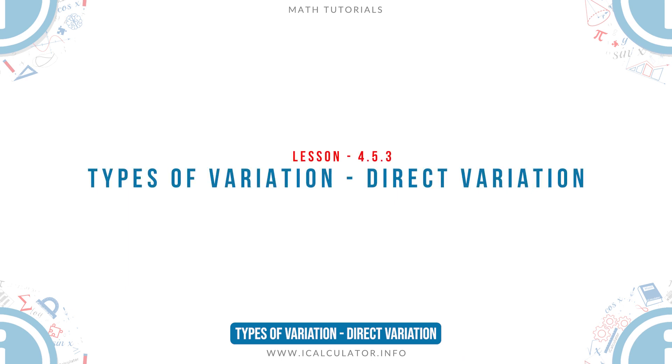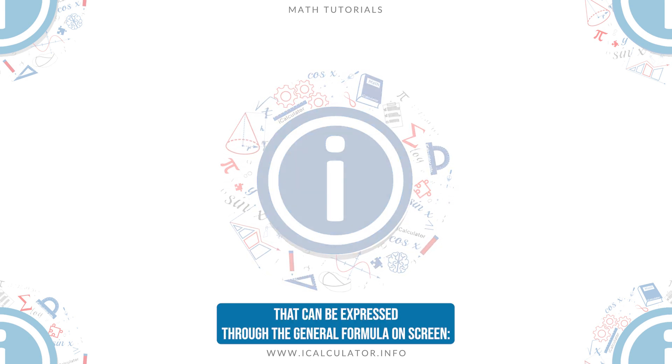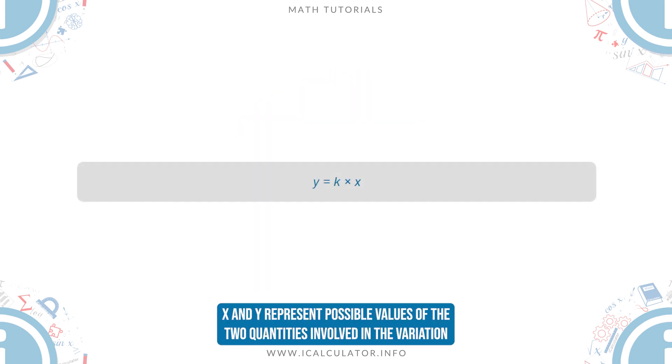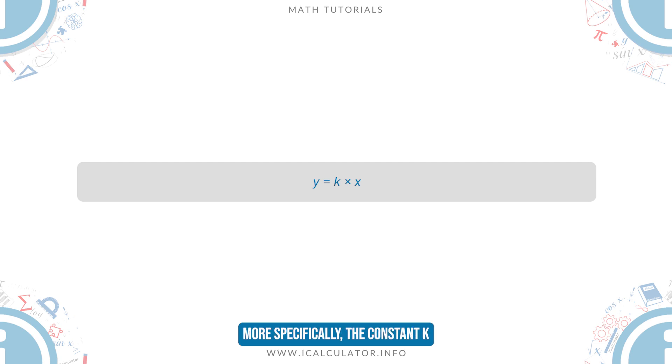Types of variation: direct variation. A direct variation is a variation that can be expressed through the general formula on screen. X and Y represent possible values of the two quantities involved in the variation, while K is the constant of proportionality that provides the value of each individual ratio or rate involved in variation. More specifically, the constant K represents the quotient of division between any vertical coordinate to the corresponding horizontal coordinate in the variation graph.